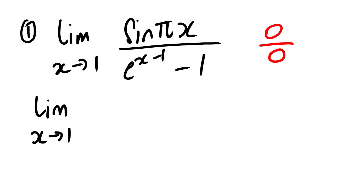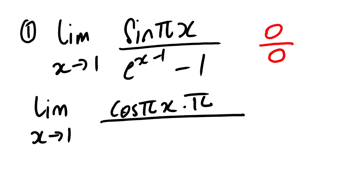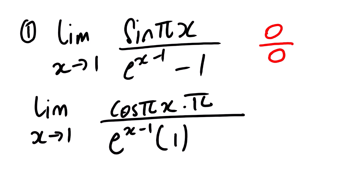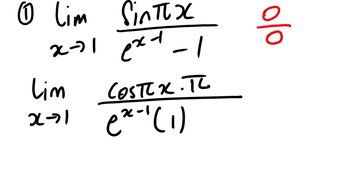For the numerator, the derivative of sin is cos, multiplied by the derivative of πx, which gives us π. For the denominator, the derivative of e to the power (x minus 1) is e to the power (x minus 1), multiplied by the derivative of (x minus 1), which gives 1, since the derivative of x is 1 and the derivative of negative 1 is 0. The derivative of the constant term is simply 0.